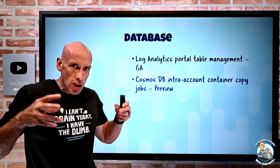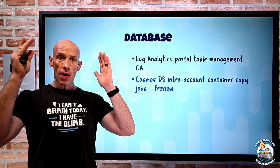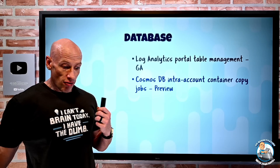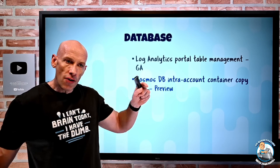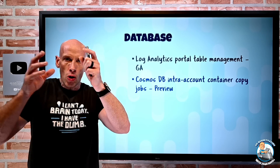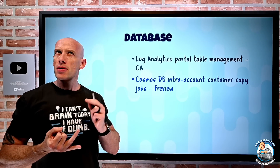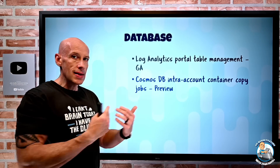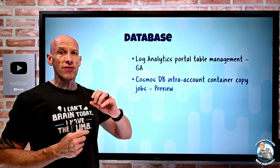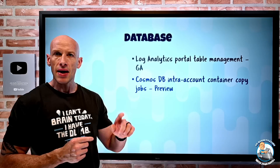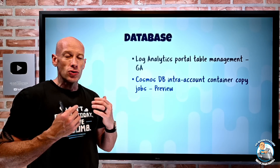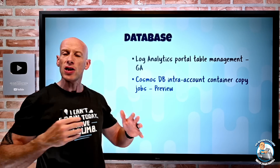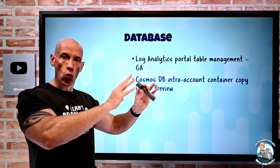Cosmos DB now has intra-account container copy jobs. Within your account, you can create a new container with a different partition key or different unique key requirements. You submit the job and it does the copy server-side from one container to the other. It's SQL and Cassandra API accounts only, and it is offline — meaning you want to stop writing to the source container while the copy is going on, because deletions or changes during that time won't be reflected in the copied data. Once it's finished, you have a complete copy of your data done entirely on the server side.